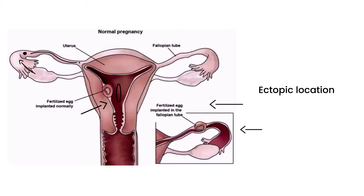Why is this a problem? The reason is because the fallopian tube doesn't expand the way a uterus does during pregnancy. Eventually the fallopian tube is not big enough to house the growing zygote as it becomes an embryo. Between six to sixteen weeks there will be a rupture, and when that happens, that's essentially the end of the pregnancy.